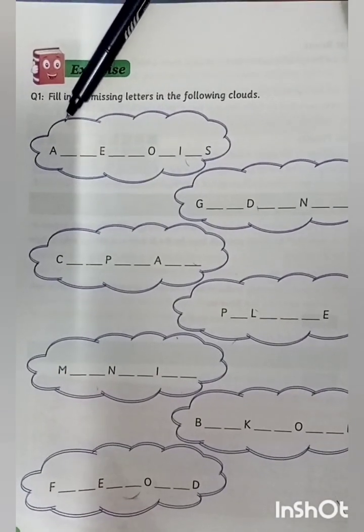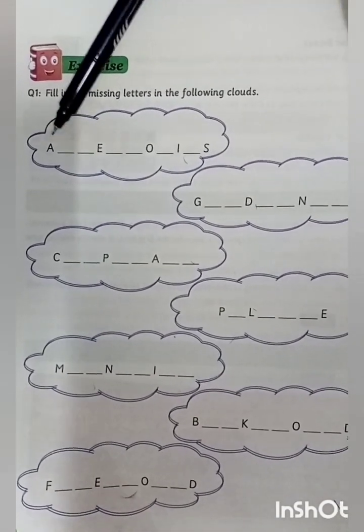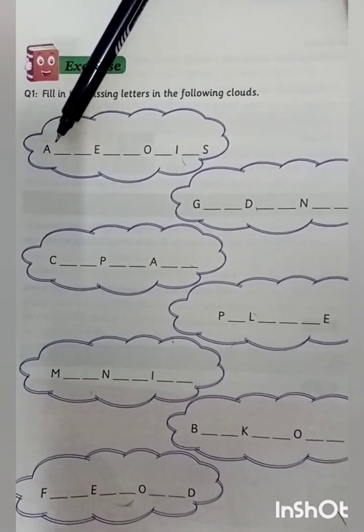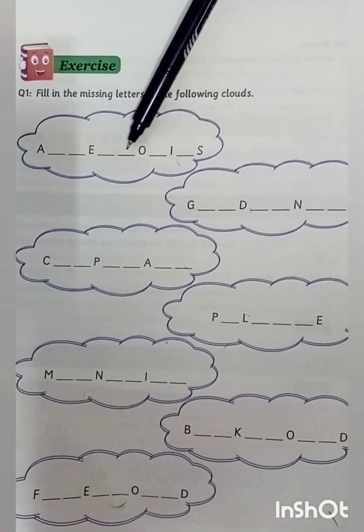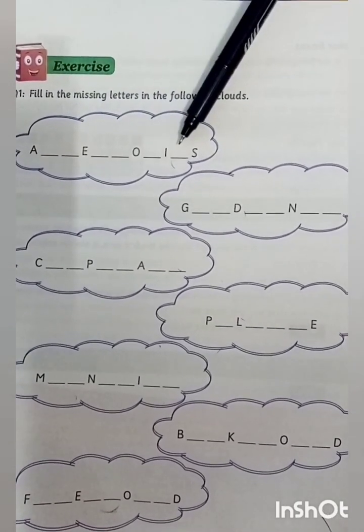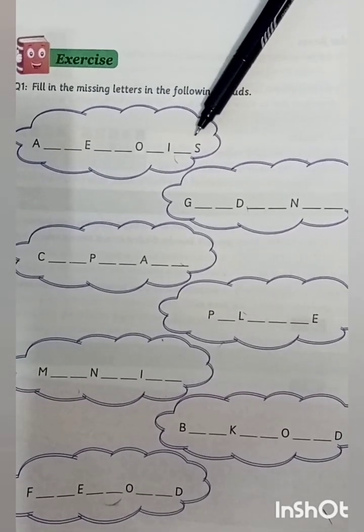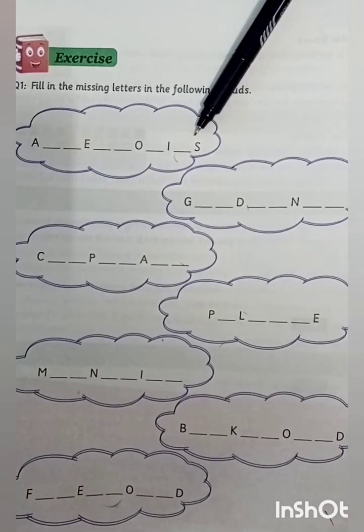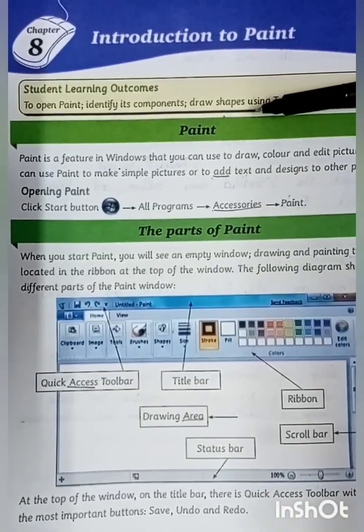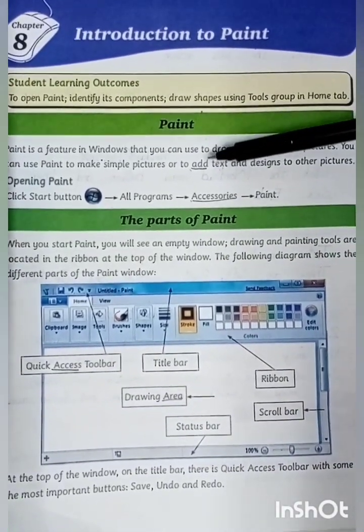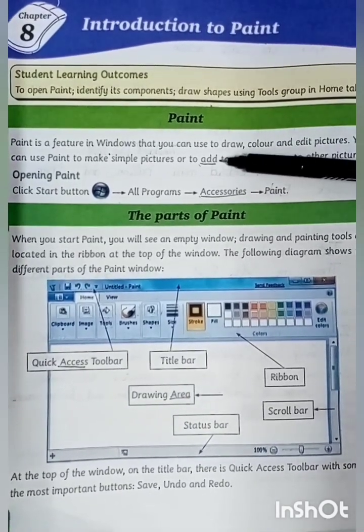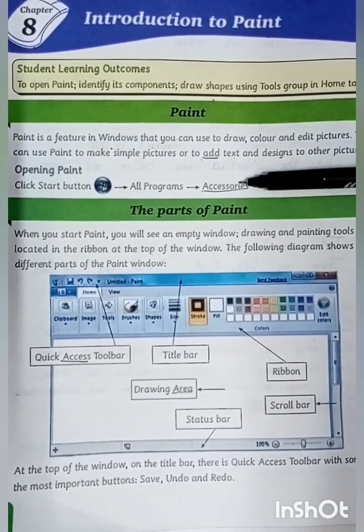Students, in our first cloud, our first word is starting from A and it has 1, 2, 3, 4, 5, 6, 7, 8, 9, 10, and 11 letters. So let's take a review from our reading. Students, I have highlighted some words starting from letter A. First one is 'add,' second is 'accessories.'